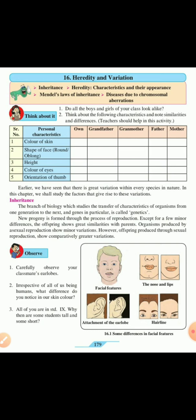Your own, your grandfather, grandmother, father and mother. So the first characteristic is color of the skin. So your own color, your grandfather, grandmother, father and mother. Shape of the face, whether round or oblong. Oblong is long face. Then height of each one of you.